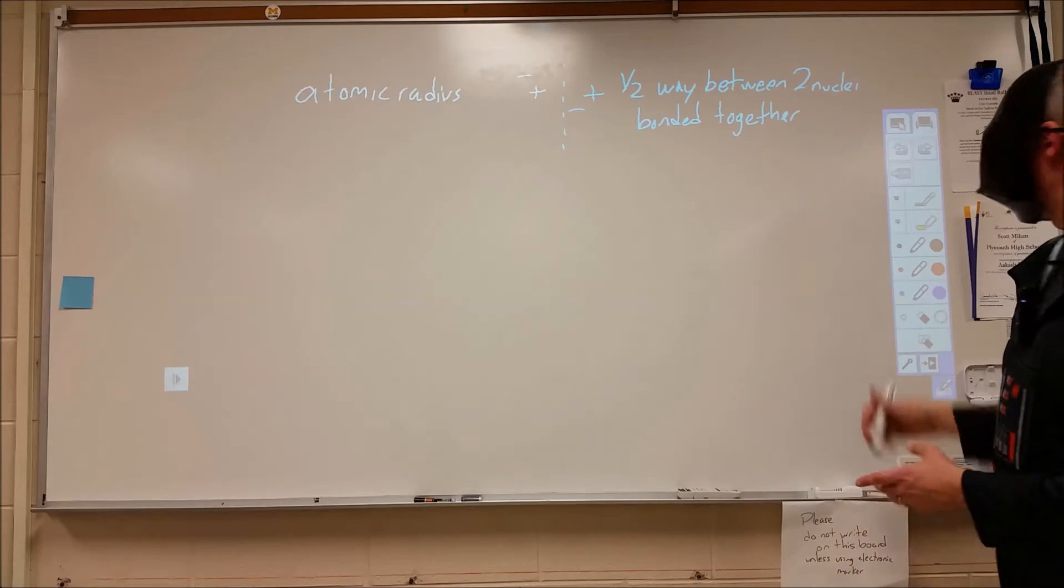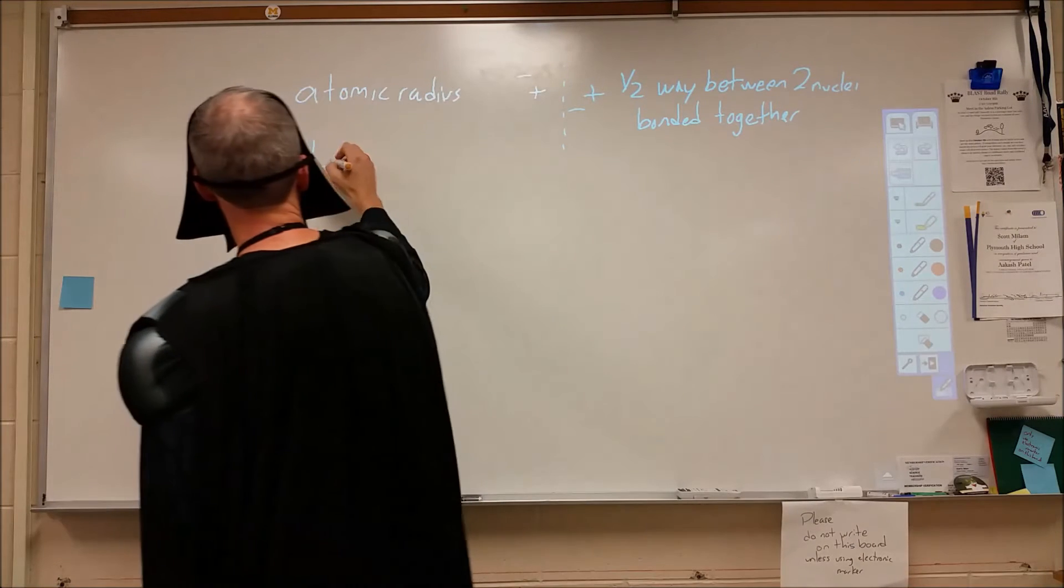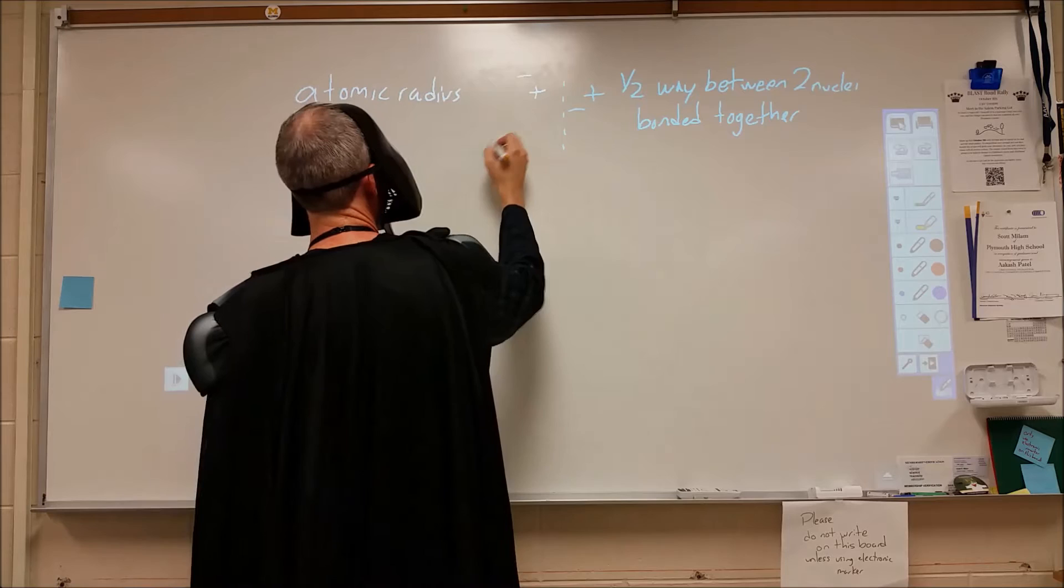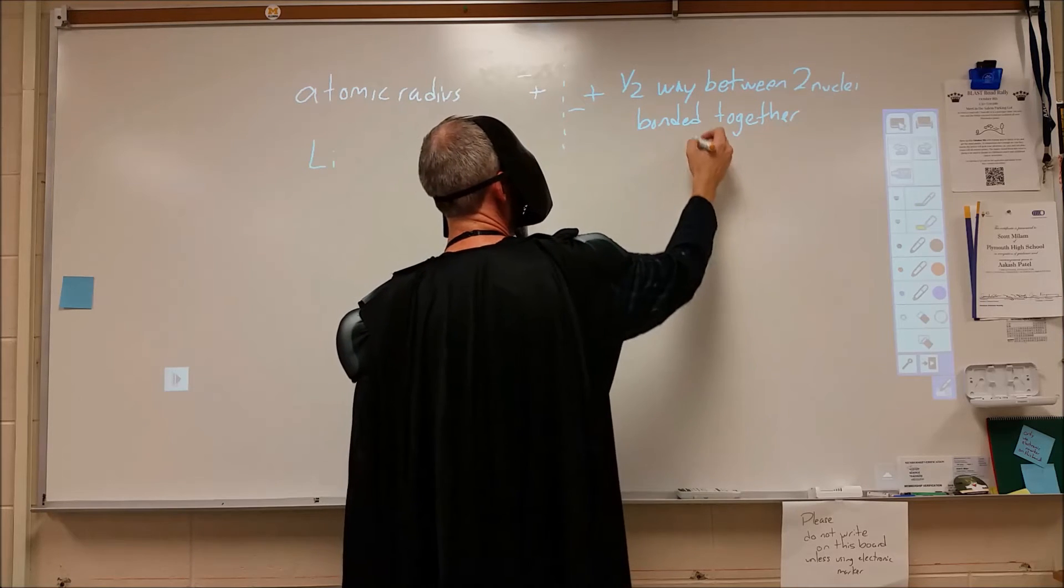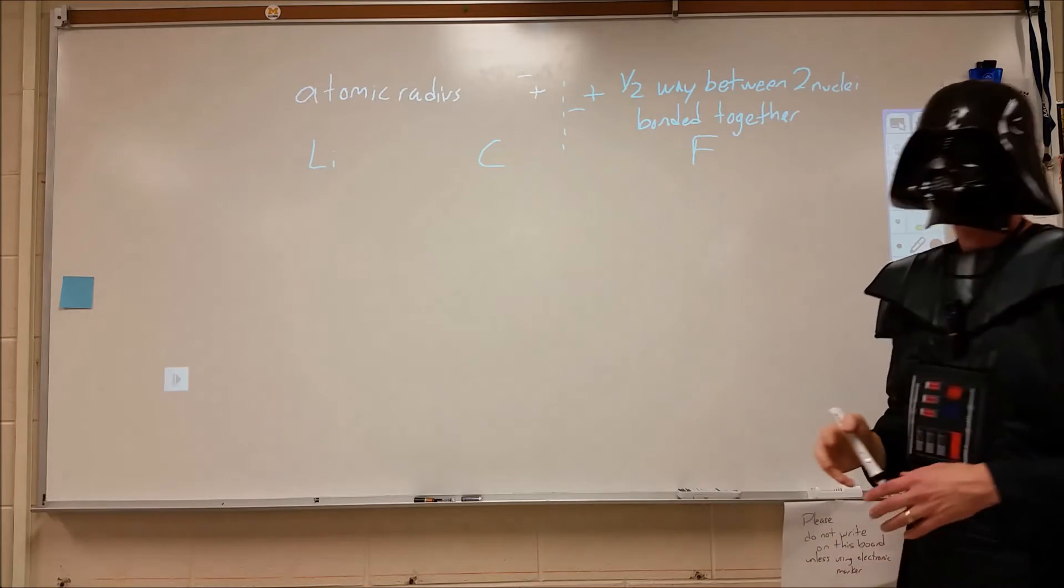Now, going across the period, if we start with lithium and we move over to carbon and we move over to fluorine, what will happen is even though we are adding protons and electrons, the size of those will get smaller.